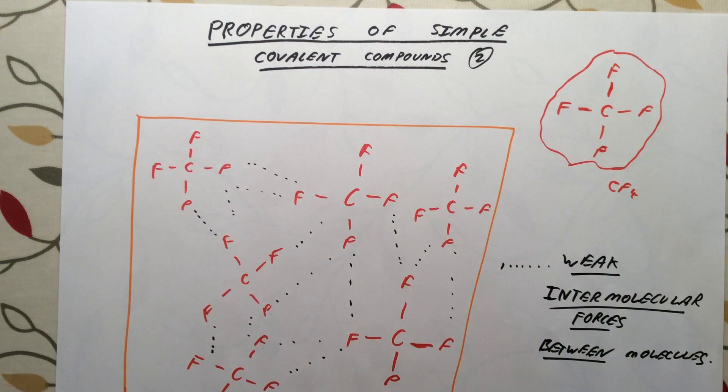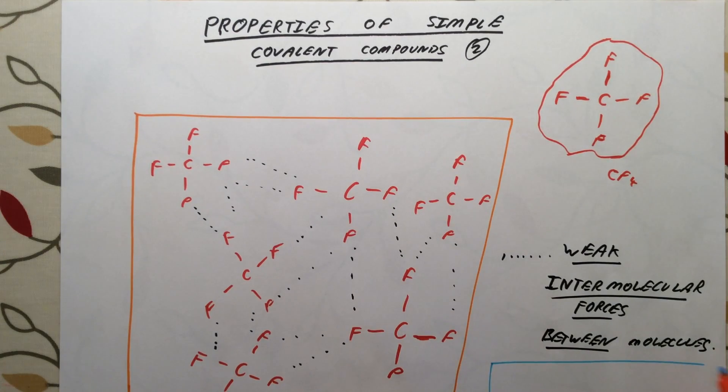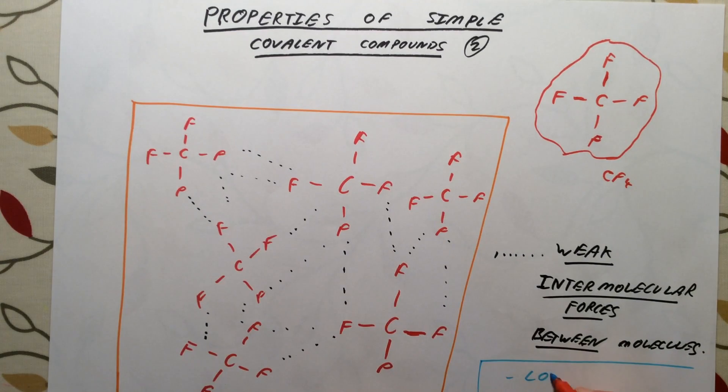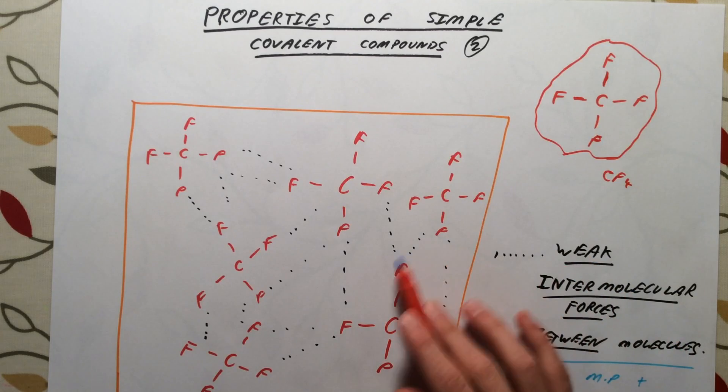So just to summarize, simple covalent compounds have low melting points and boiling points. Low melting points and boiling points because the forces between the molecules are very weak and therefore easily overcome.